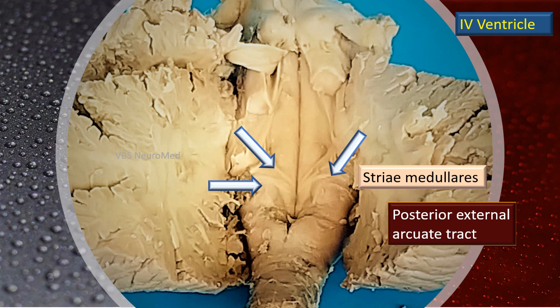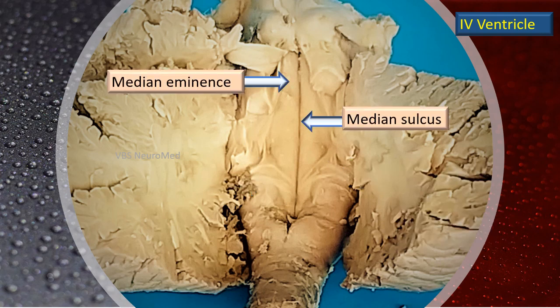Emerging from the midline on either side is a spray of white fibers called the stria medullaris — these are the posterior external arcuate fibers, or the posterior external arcuate tract. Now let's identify some key landmarks in the floor of the rhomboid fossa. This is a very common short-note question in theory papers, and can also be asked in viva and practicals.